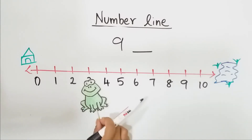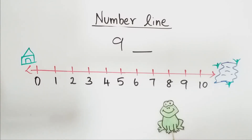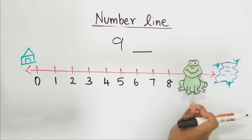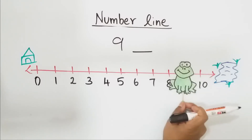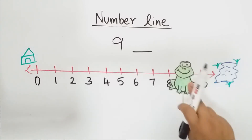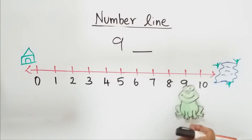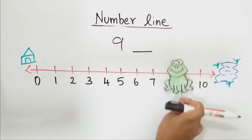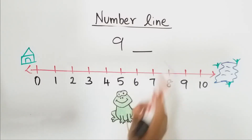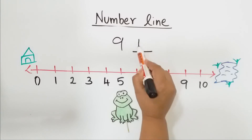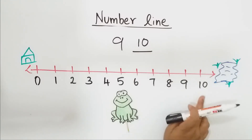Now children, what is the after number of nine? So shall we keep this froggy on nine? After number means it is the next number. So what is the after number of nine? Ten. Very good children. The after number of nine is ten.